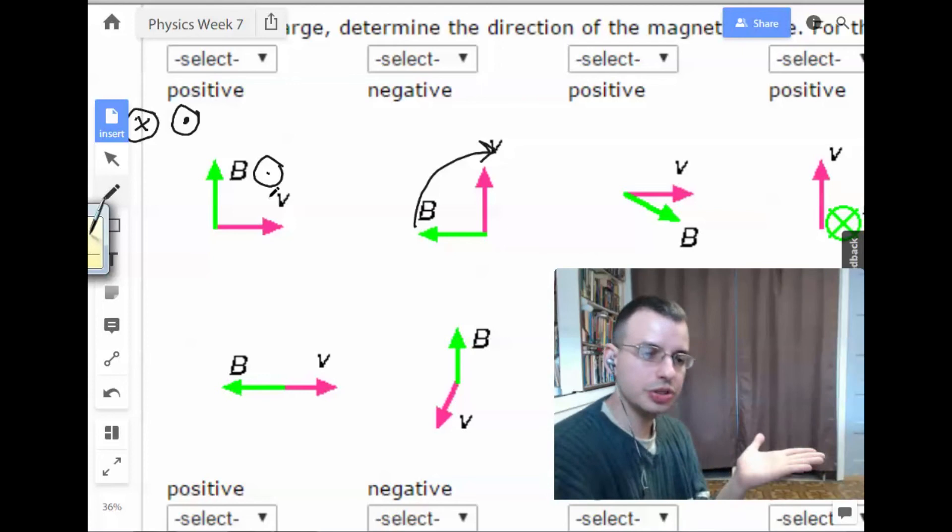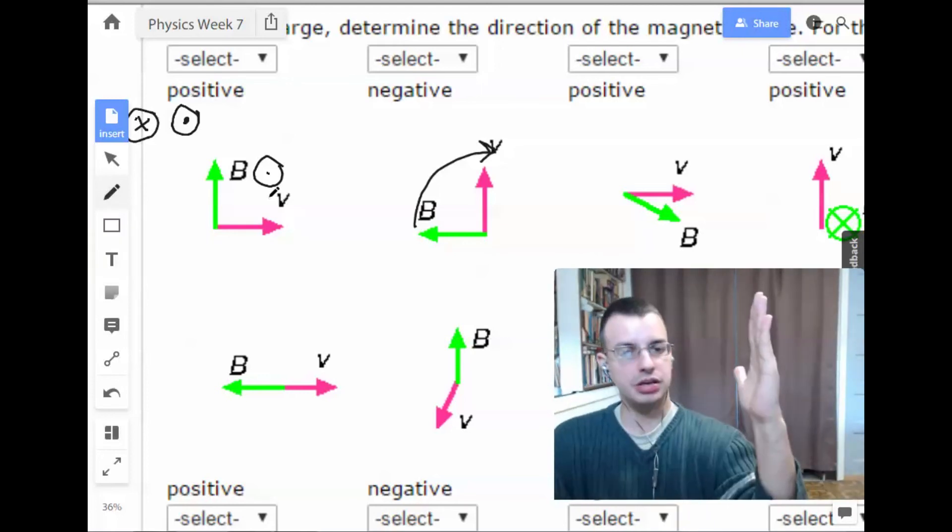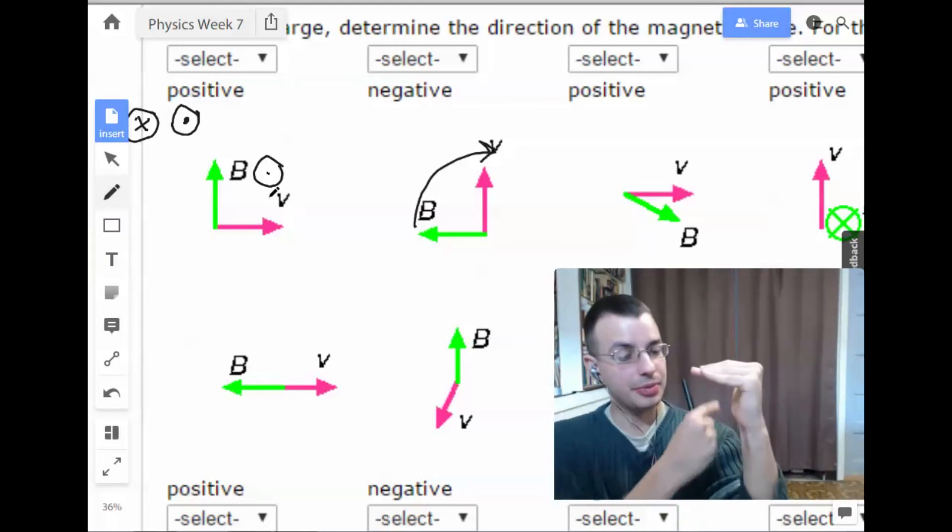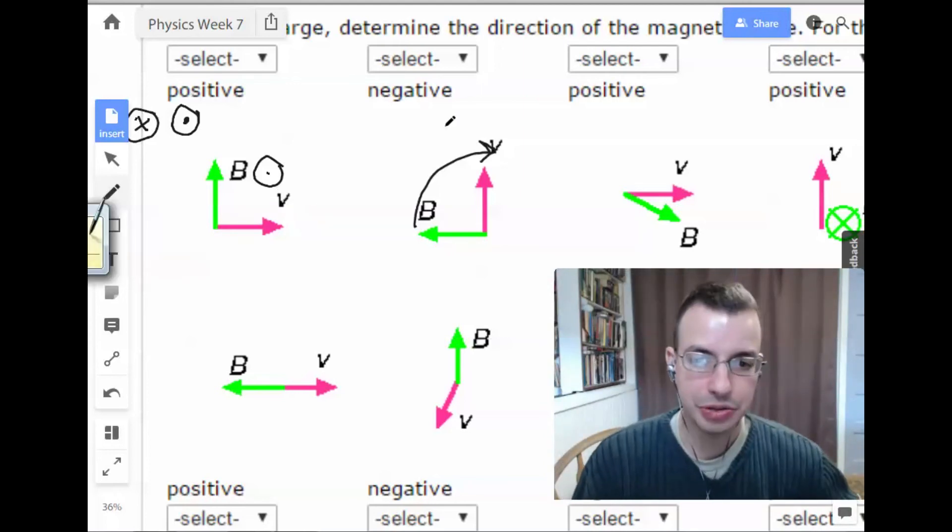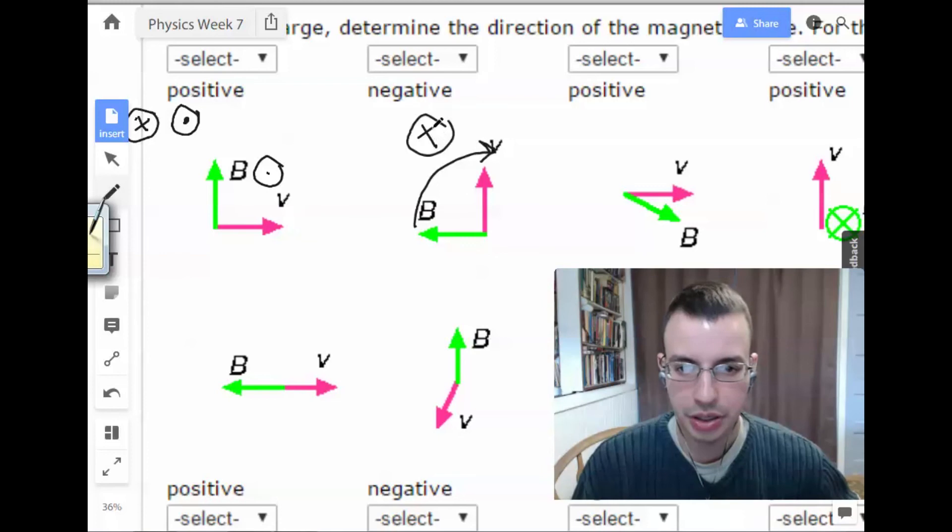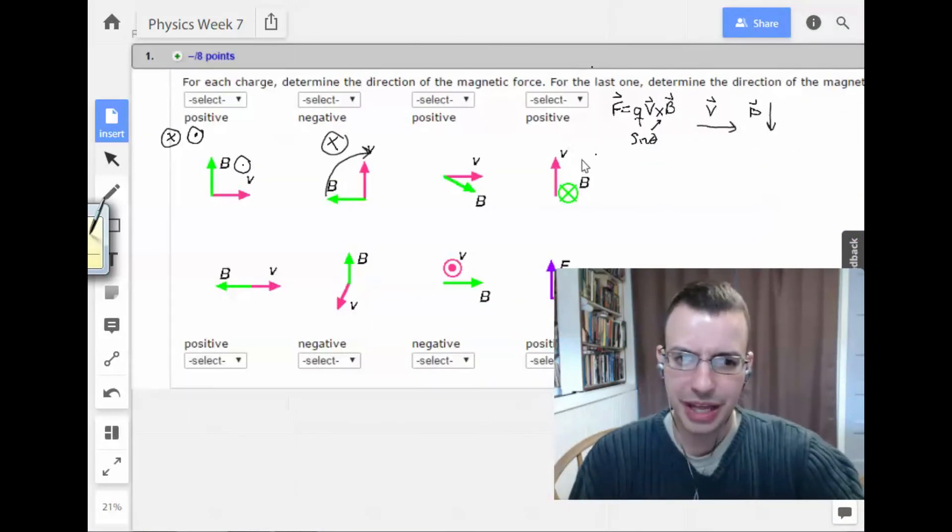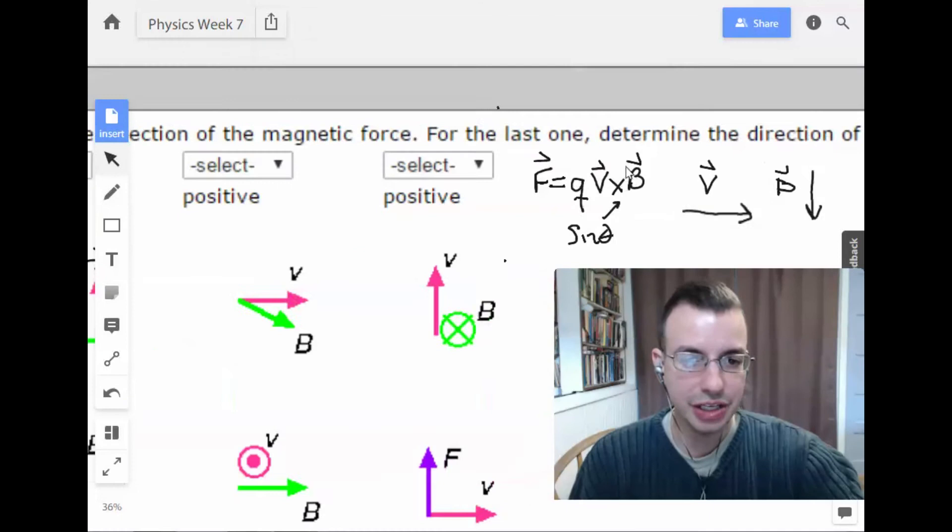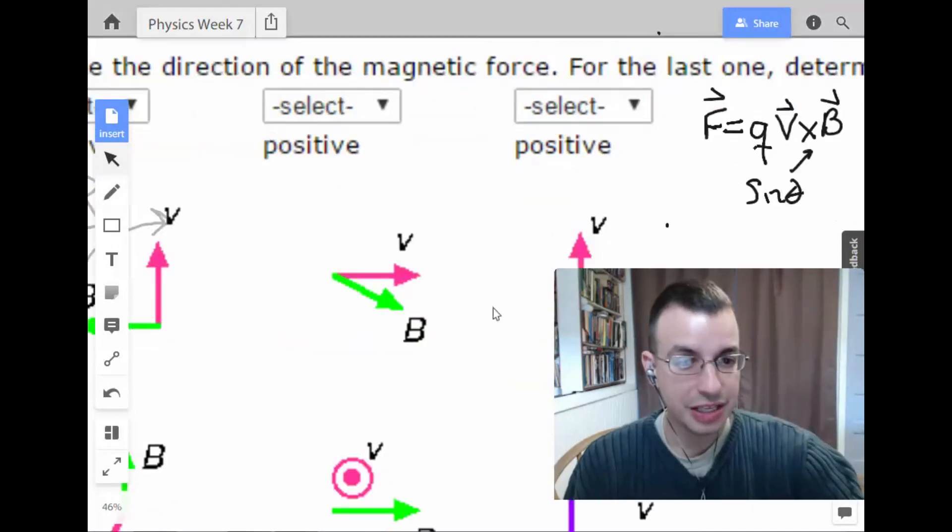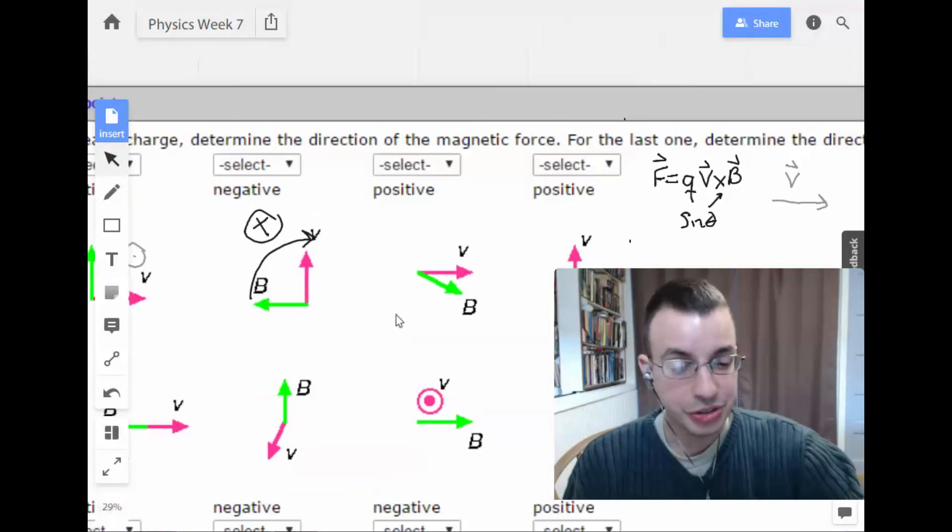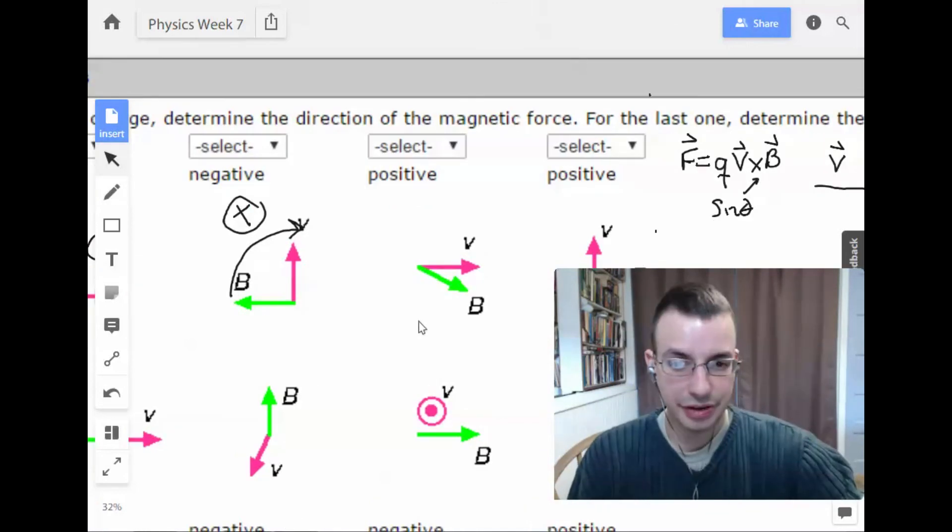So what we do is V cross B, so it's out of the page. But it's negative, so it's going to be the opposite direction. So where'd you come up with that whole negative idea? The negative idea is right here, because you multiply Q, V, cross B. So that Q has an effect. As far as direction goes, it doesn't really matter except for the positive or negative.